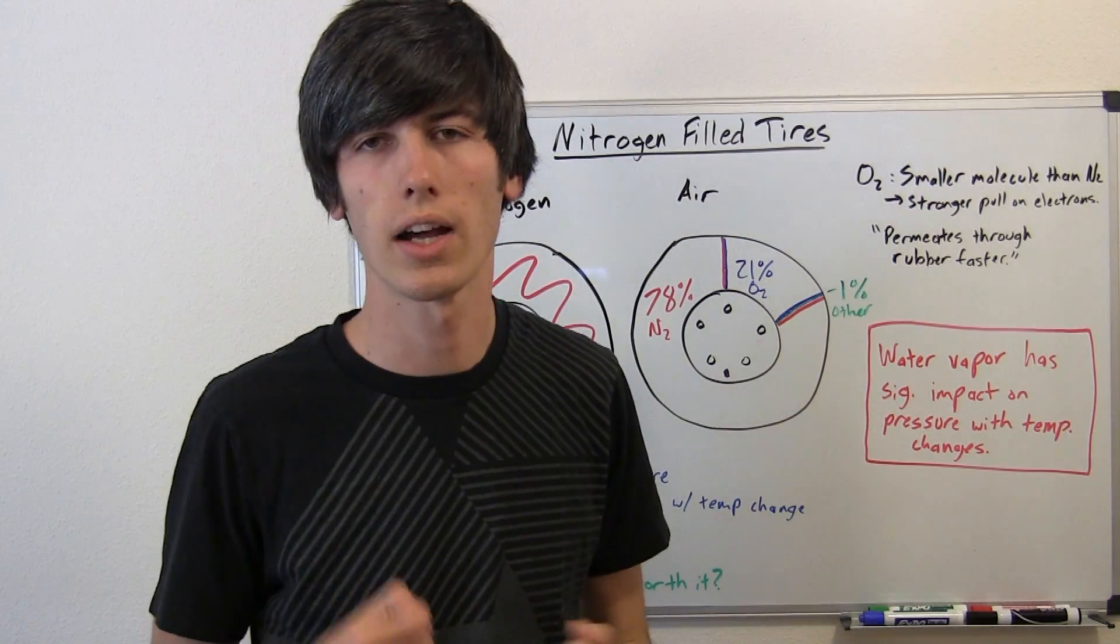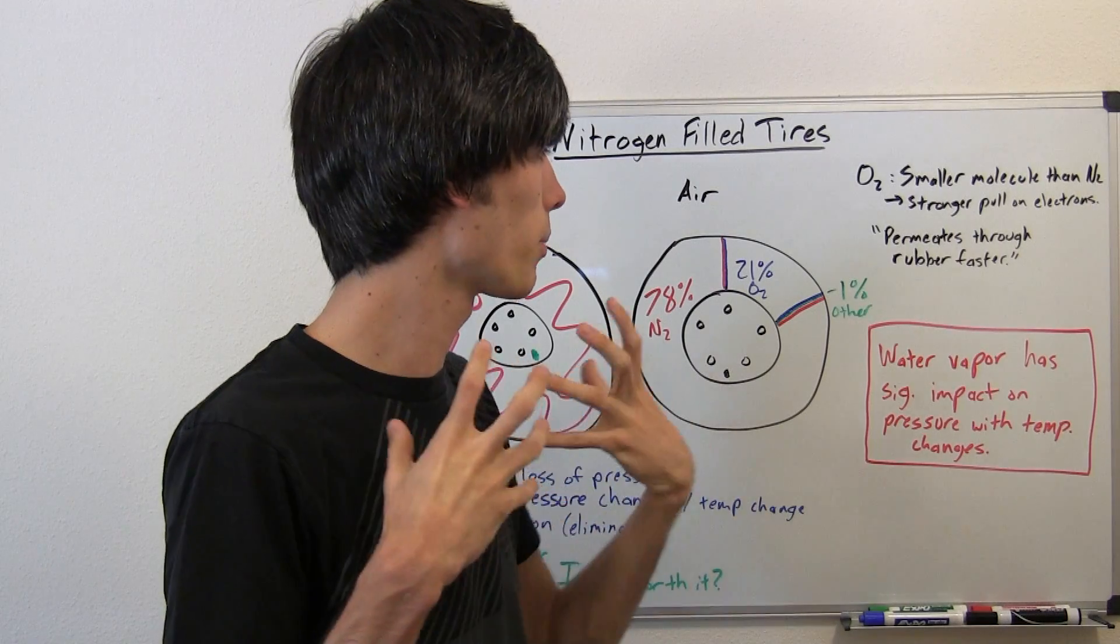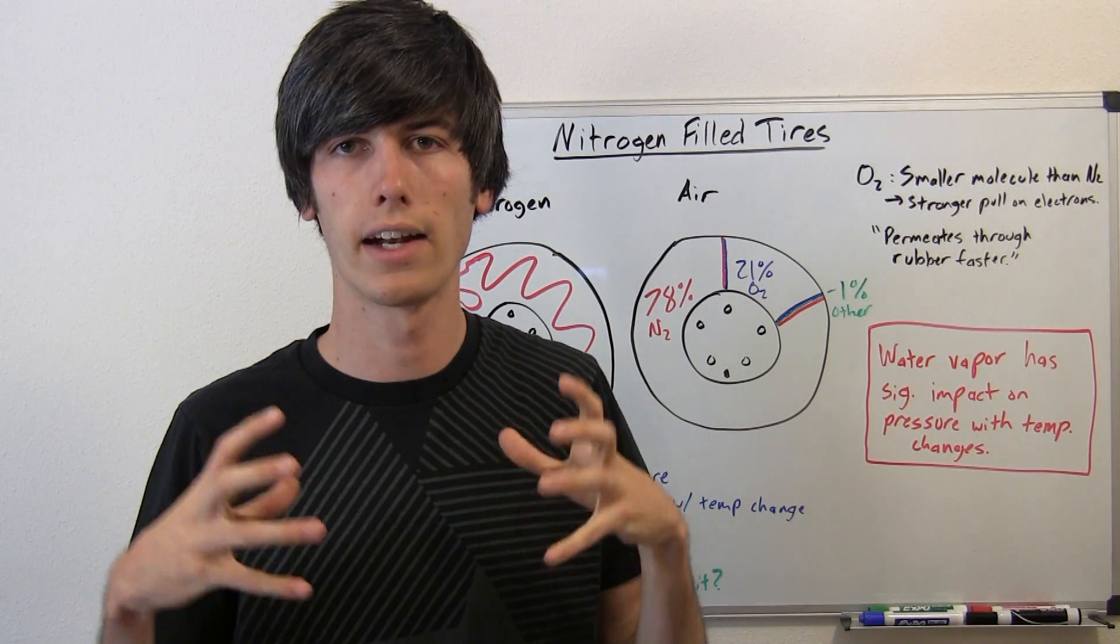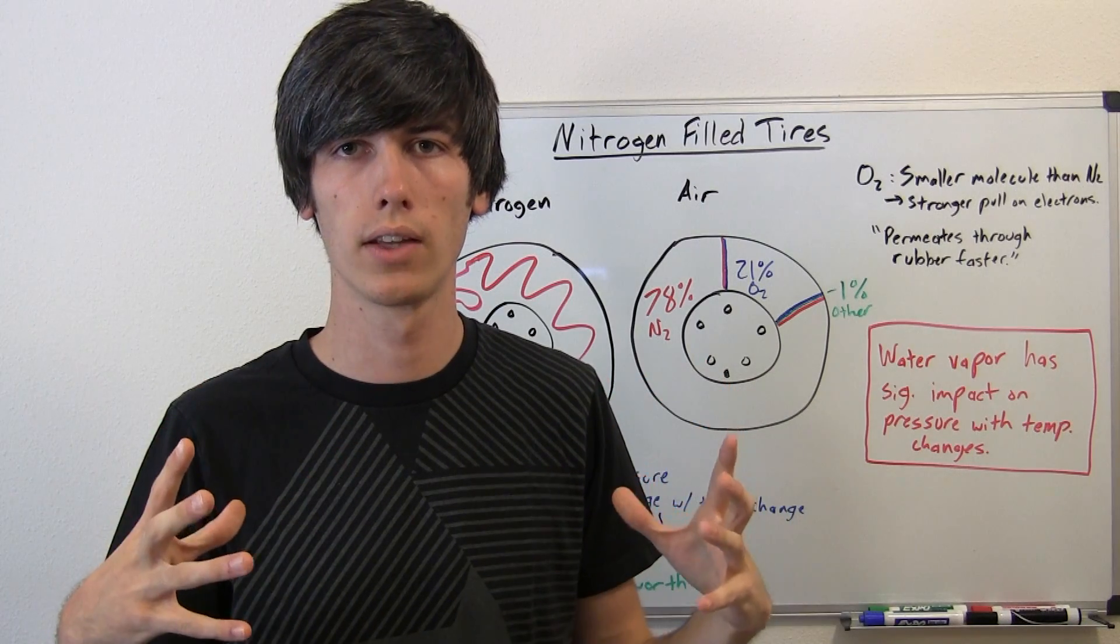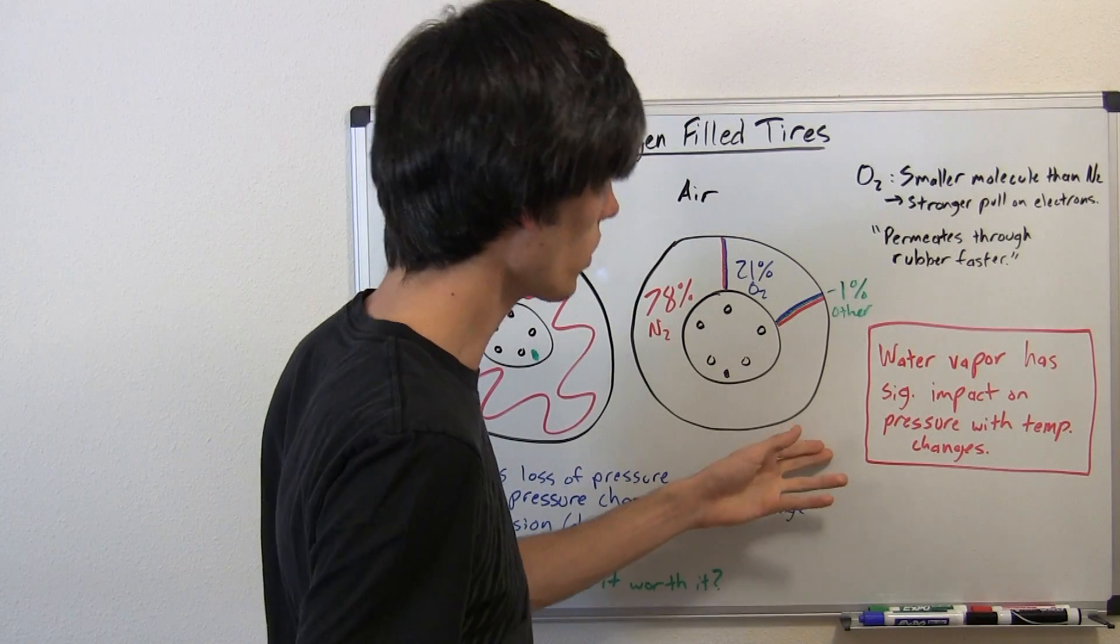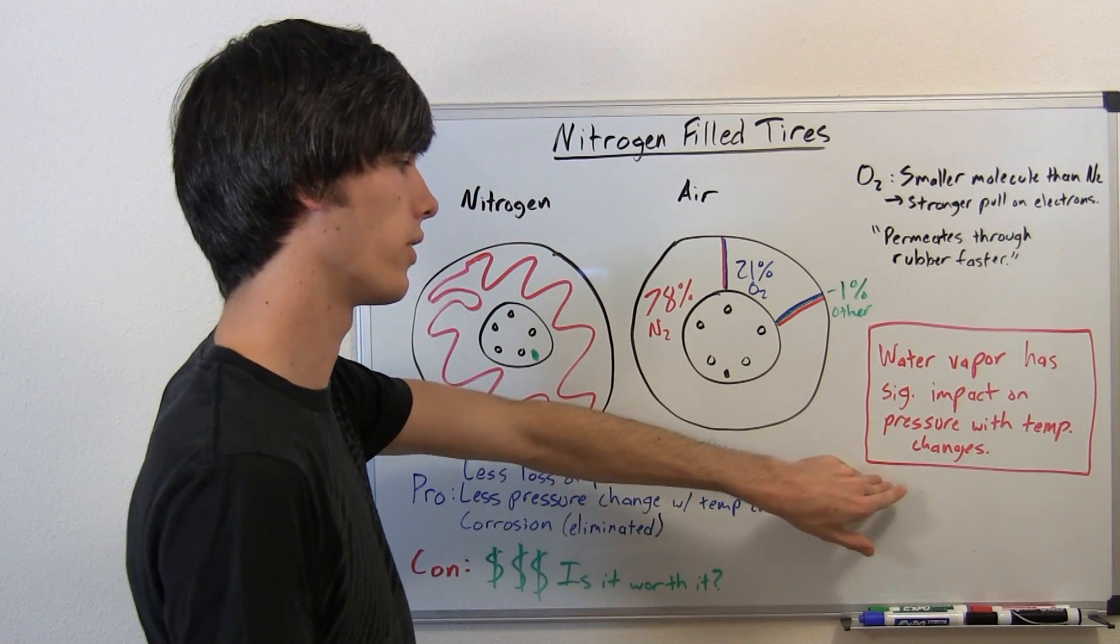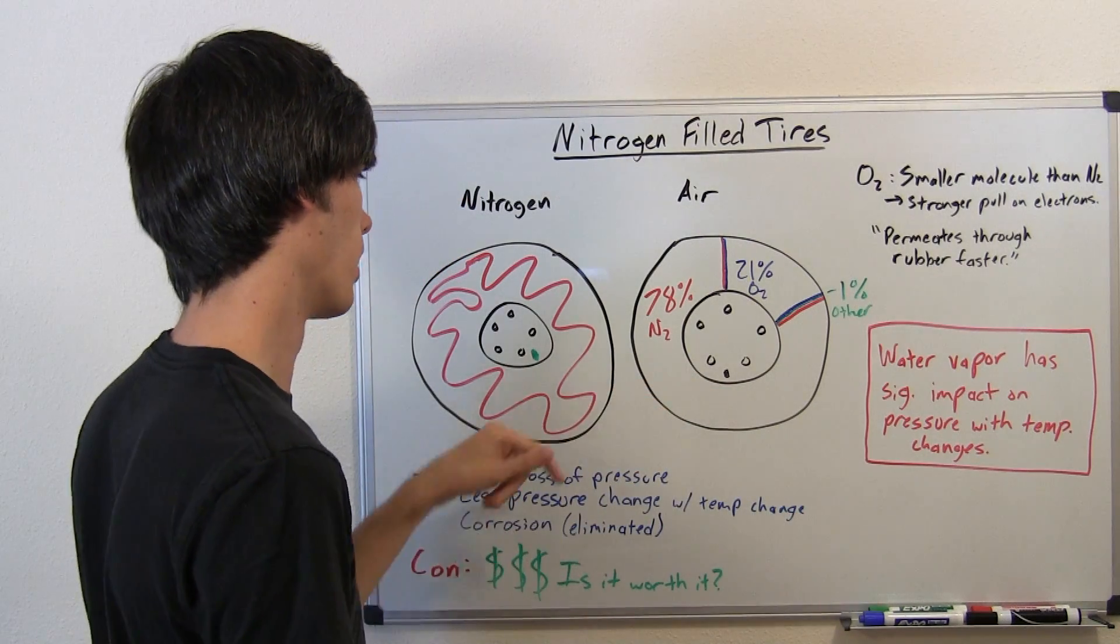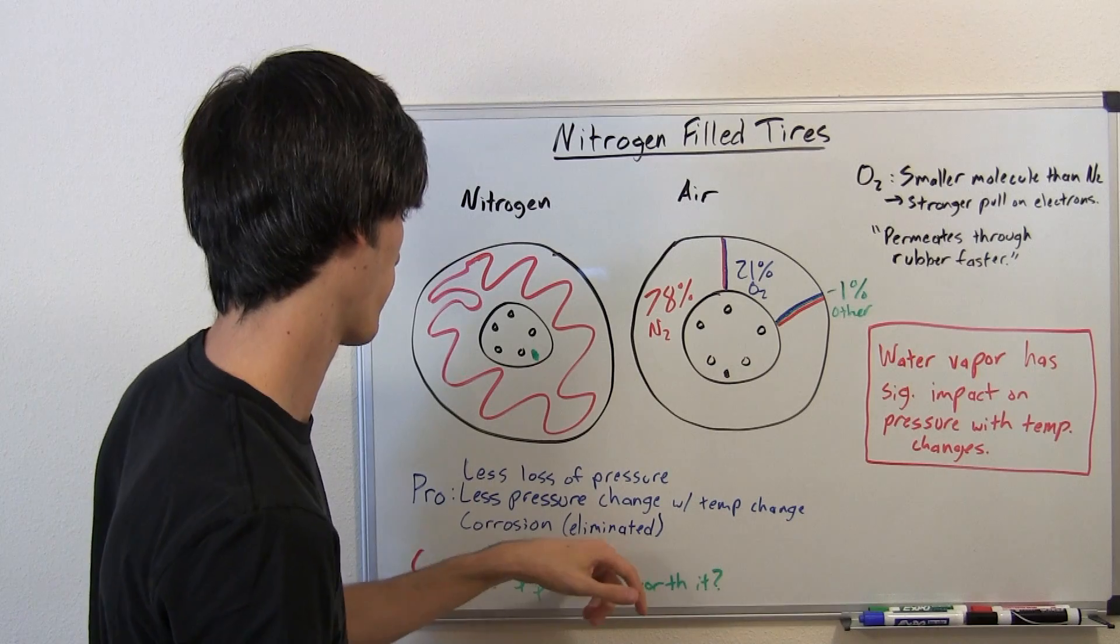Say you're at the race track, and you're heating up your tires. Your tires are heating up the air inside, and that air has water vapor in it, so it expands a lot. So the tire pressure increases, and consequently, you have less grip because your tires are over-inflated. So that would be a negative effect, and I think that is the main reason why you would want to use nitrogen, pure nitrogen, rather than air.